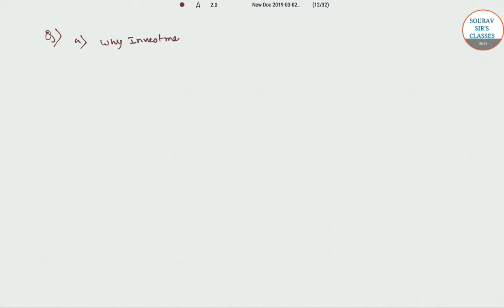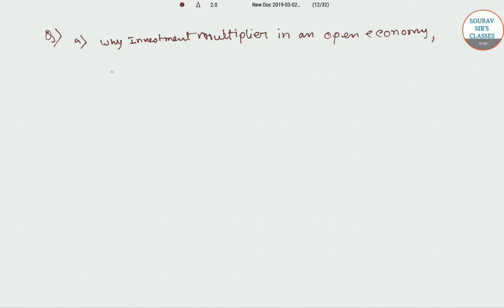The first question, question number (a), is given as: why is the investment multiplier in an open economy less than in a closed economy? This is question number (a).